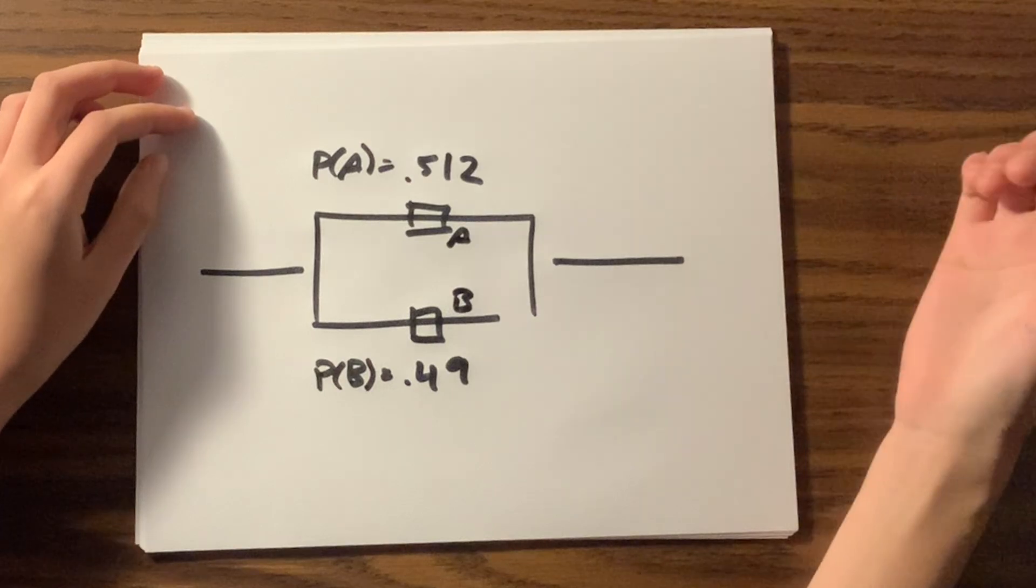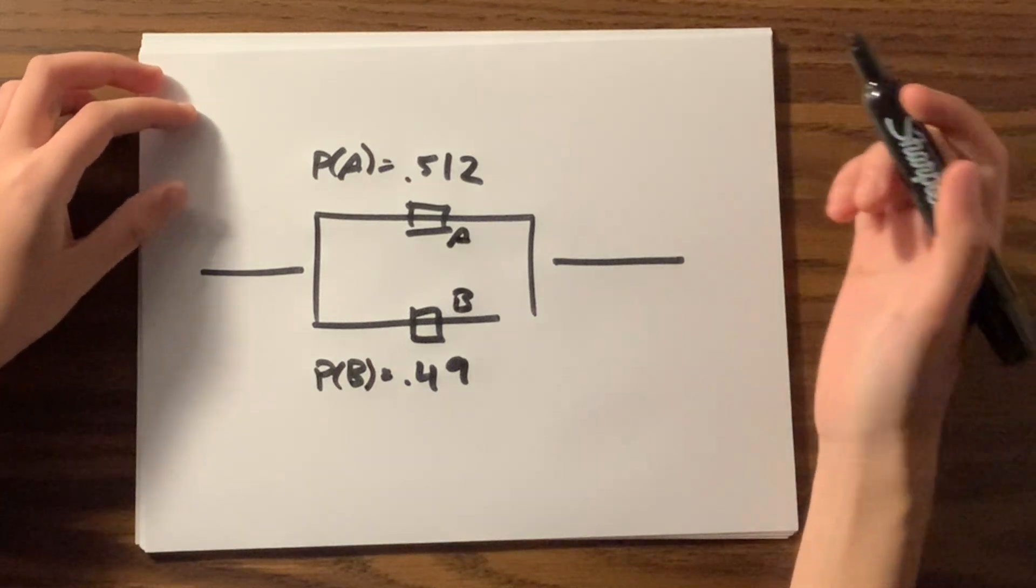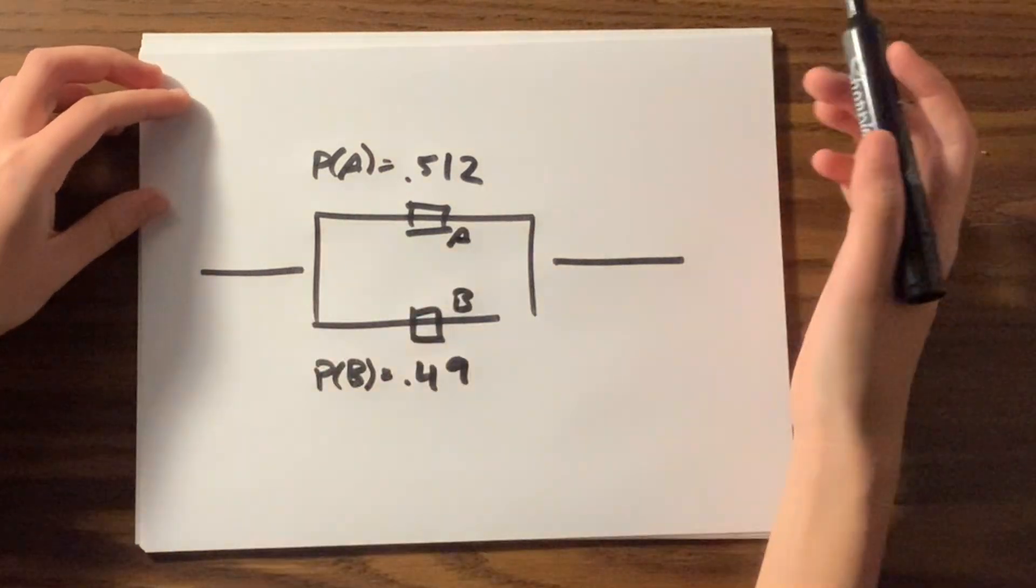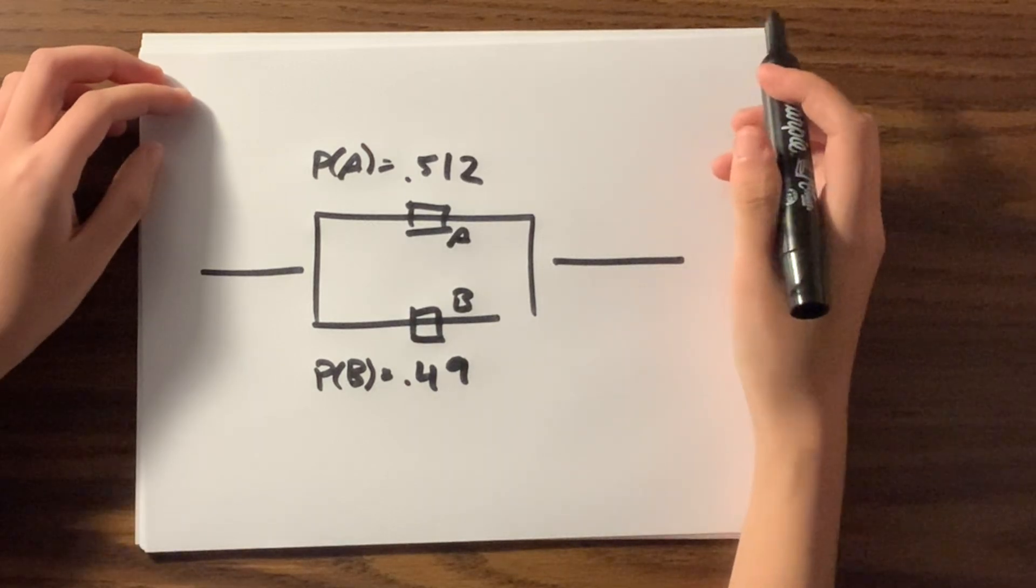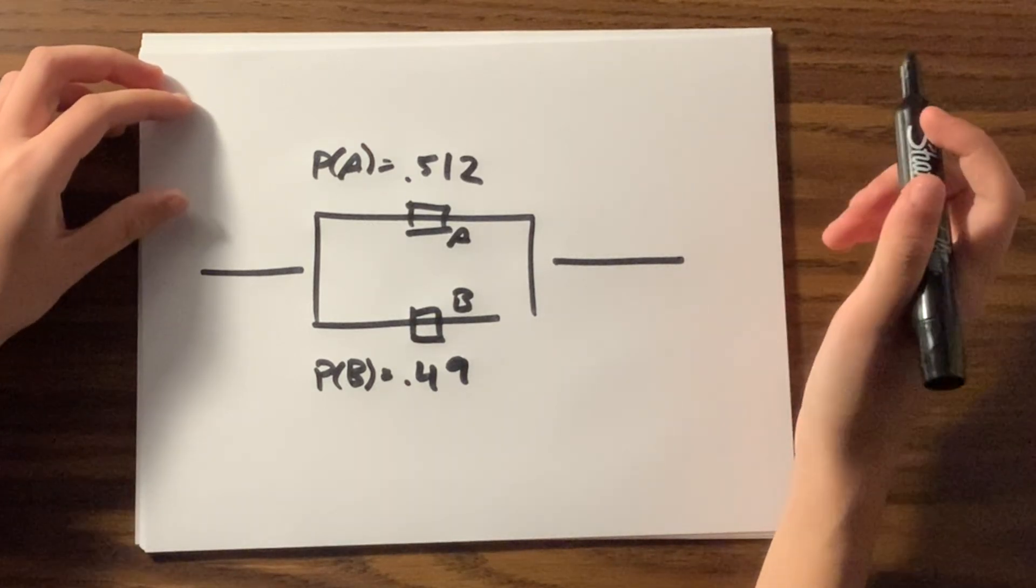Now we have a circuit that is in parallel and we want to see the probability that this overall circuit is going to work. If we remember the addition rule of the union, we can use that to solve the probability of this circuit working.